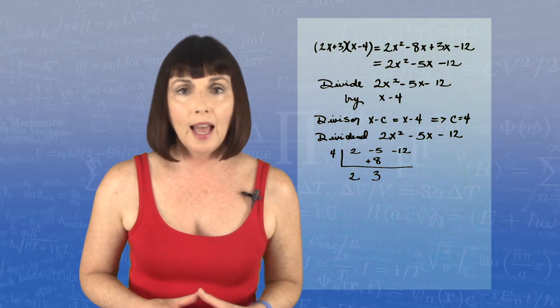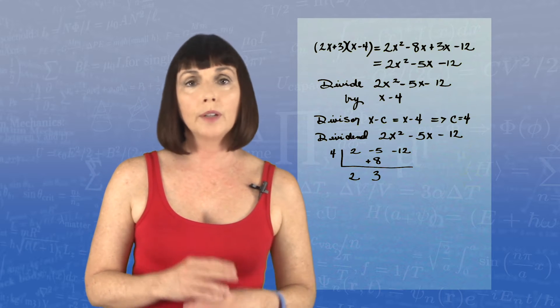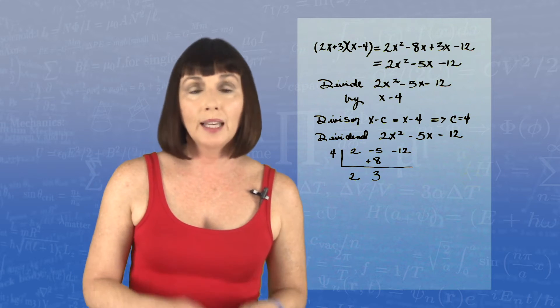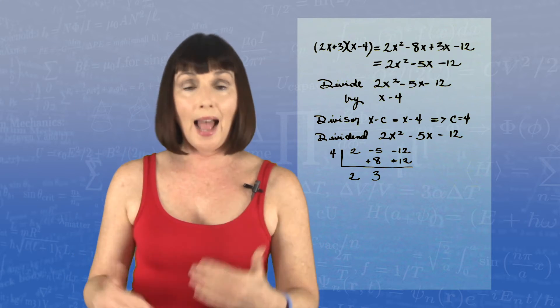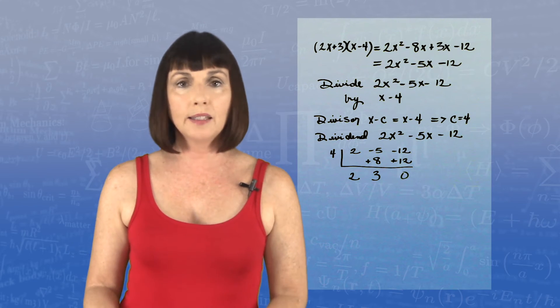Now you multiply again. 3 times 4 is 12. Now you put that in the next place on the second row. And we have negative 12. And again, we're adding plus 12. And that's 0.